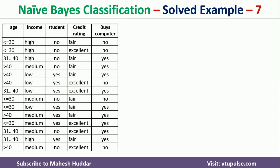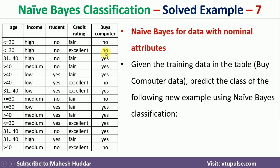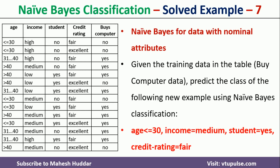We have been given a training set with 14 examples and 4 attributes: age, income, student, and credit rating. 'Buys computer' is the target class, with two possibilities — the person buys the computer or does not buy the computer. Given these training examples, we have to classify a new example.